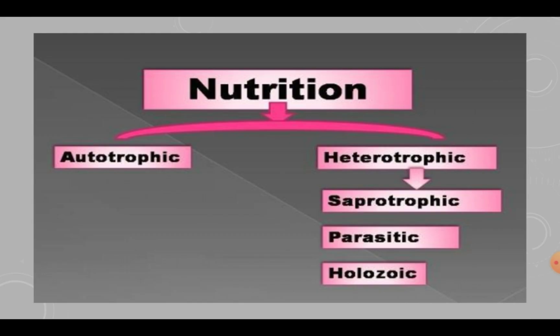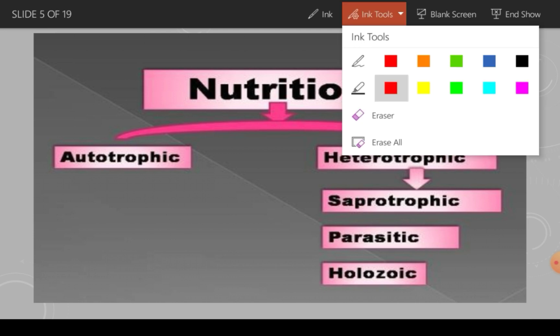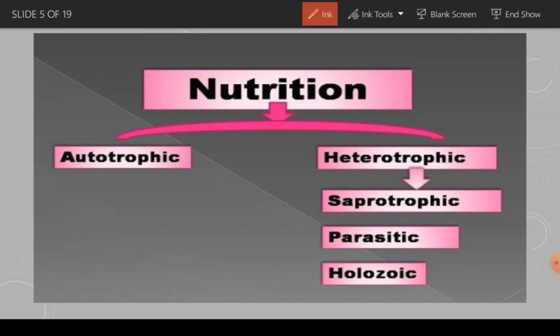Here you can see the different types of nutrition. There are two types: one is autotrophic and the other is heterotrophic. Let's first look into what autotrophic nutrition is.